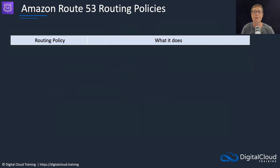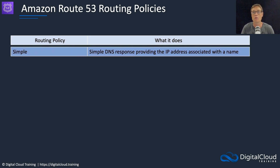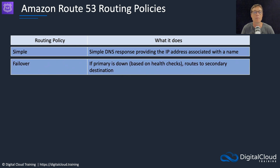Route 53 is also an intelligent DNS service. We have things called routing policies, which determine which responses are provided to the client DNS resolver. For example, we can have a simple routing policy — the DNS response will provide the IP address associated with a DNS name. We can also have failover: if the primary record is down, Route 53 can perform health checks against your service, and if it's not accessible, Route 53 will automatically provide a different address in DNS resolution requests.